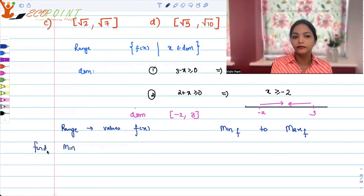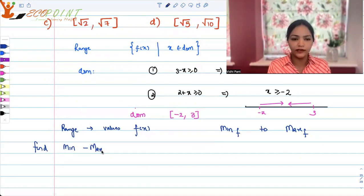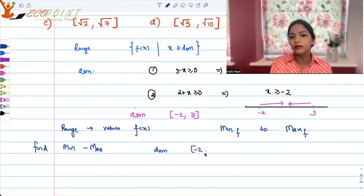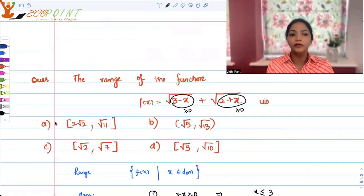Let's find minimum, maximum. Why does it become easy for us if we find out min-max? Because we know that we can find out min-max here. We just figured out domain. Domain is your closed interval minus 2 to 3. This is closed and bounded. That is, your domain is a compact set.